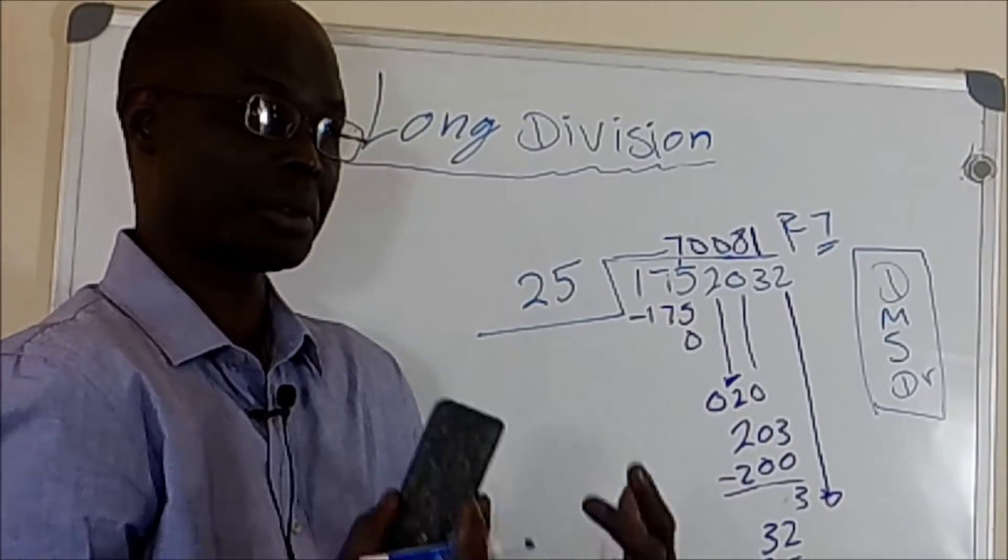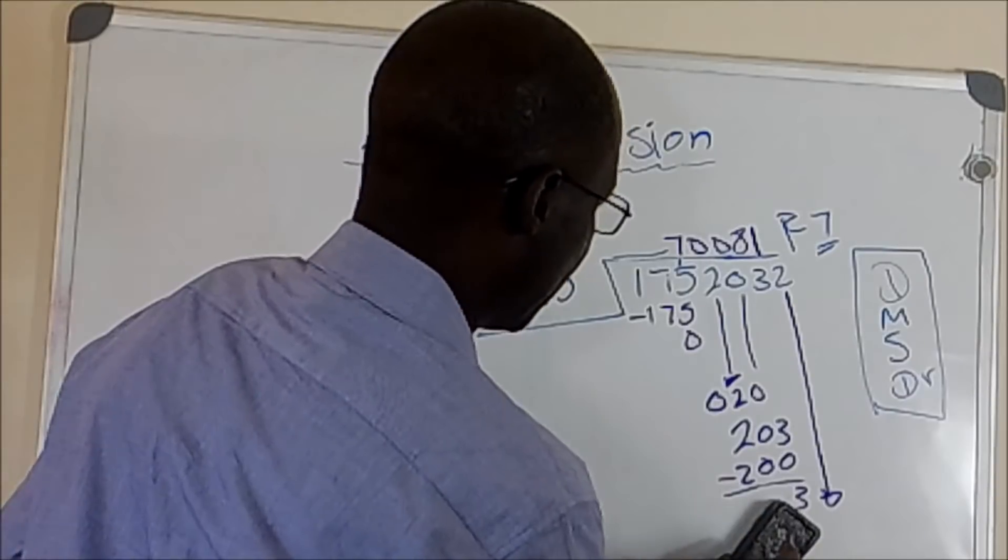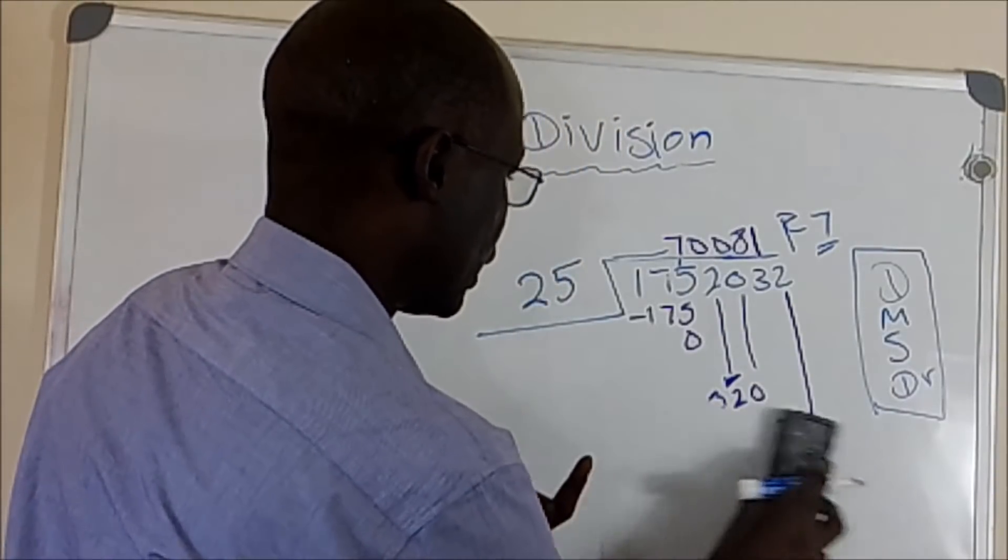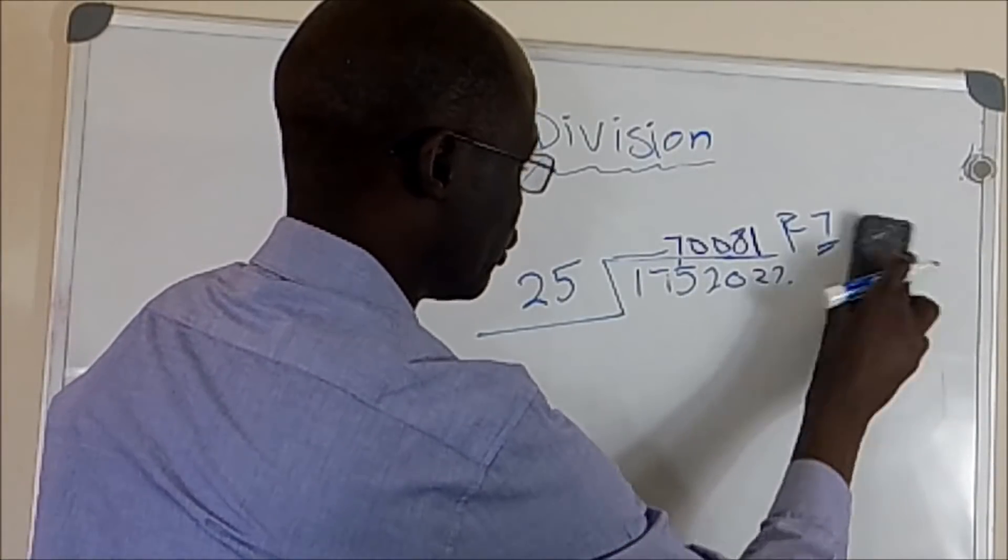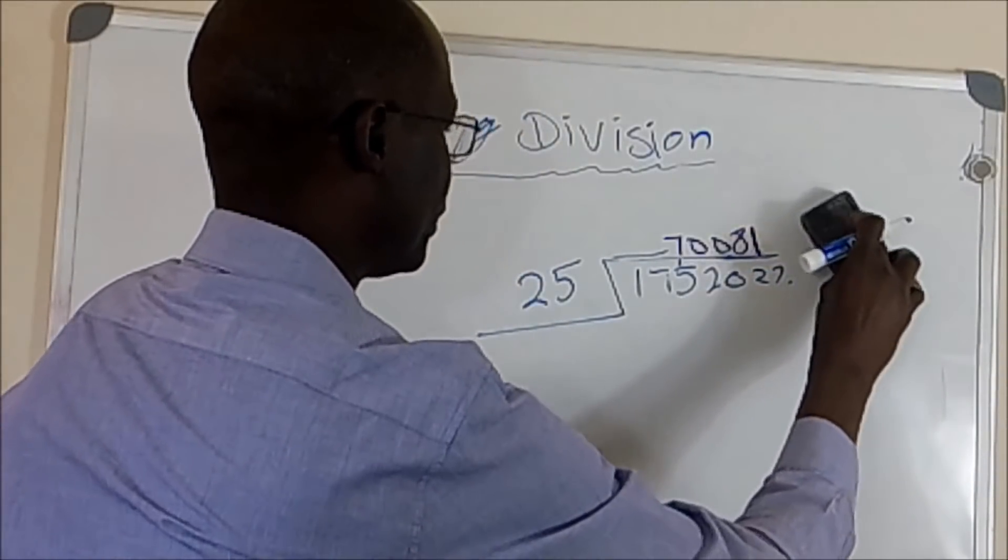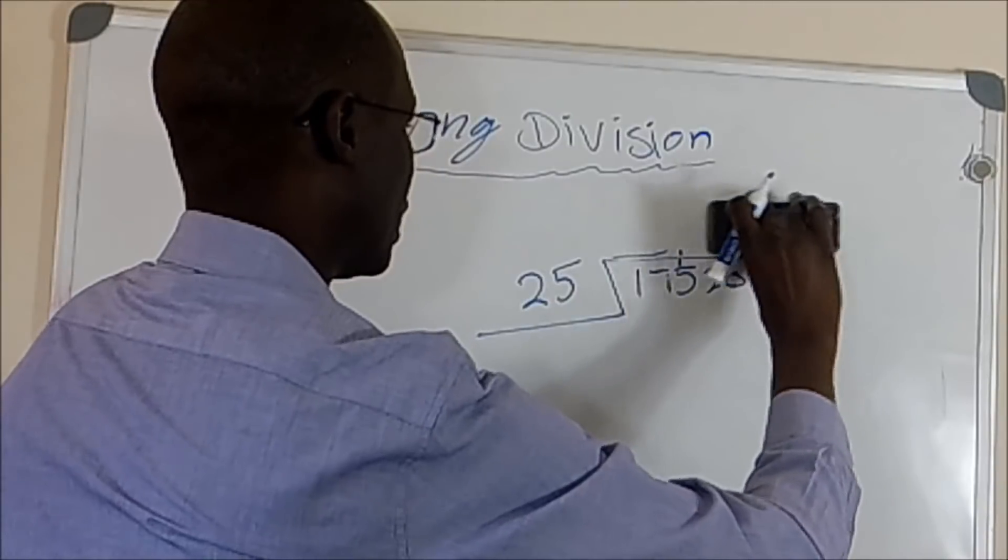So the answer should be 7,081, and the remaining is 7. So this is how you solve it. If you have an issue, let me know. So let me add a simple problem, and we see how we do it.